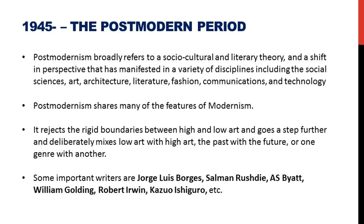We then move to the postmodern period, which refers to a social, cultural and literary theory representing a shift in perspective manifested across a variety of disciplines, not just literature. It rejects the boundaries between high and low literature — a characteristic from the Victorian times — and goes a step further by mixing high and low art, and blending genres with other genres. Some important writers include Salman Rushdie, A. S. Byatt, William Golding, Robert Irwin and Kazuo Ishiguro, among many others in the contemporary period.